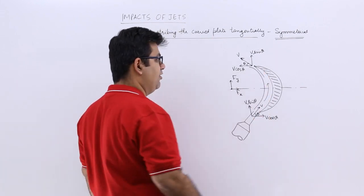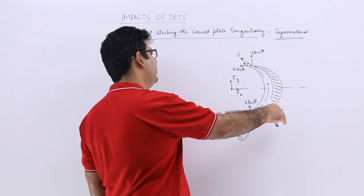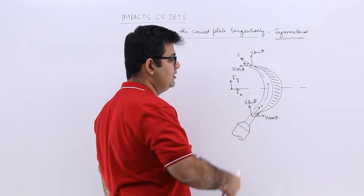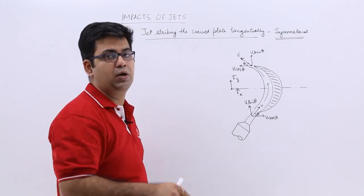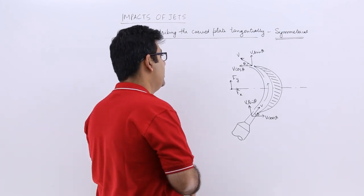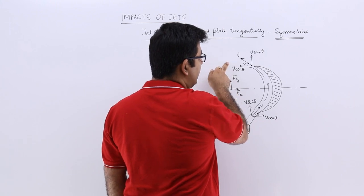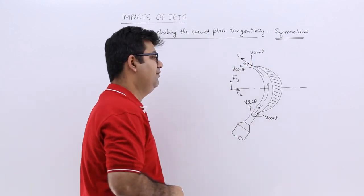It flows over this curved plate and comes out with the exact same velocity as it was entering with, because we have assumed that there is no friction along the surface of the plate. So it comes out with velocity v again, it will have two components: v cos theta and v sin theta.